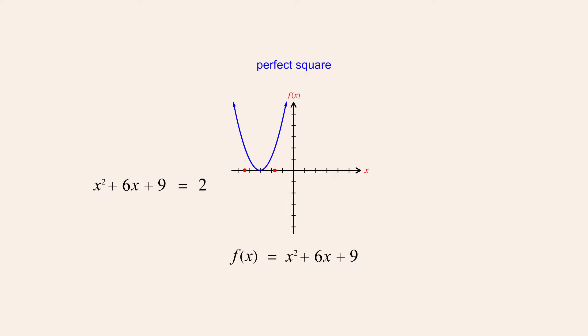But since the right side of the quadratic equation has also been increased by two, the solutions to the equation are no longer the values of x where the function is equal to zero. They are now the values of x where the function is equal to two. These are the same x-values where the original function was equal to zero. Therefore, the solutions to this equation will be the same x-values as the solutions to the original equation.